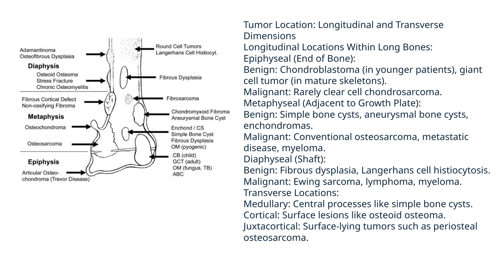Tumor location: longitudinal and transverse dimensions. Epiphyseal (end of bone) — benign: chondroblastoma in younger patients, giant cell tumor in immature skeletons; malignant: rarely clear cell chondrosarcoma. Metaphyseal (adjacent to growth plate) — benign: simple bone cysts, aneurysmal bone cysts, and chondromas; malignant: conventional osteosarcoma, metastatic disease, myeloma. Diaphyseal (shaft) — benign: fibrous dysplasia, Langerhans cell histiocytosis; malignant: Ewing sarcoma, lymphoma, myeloma.